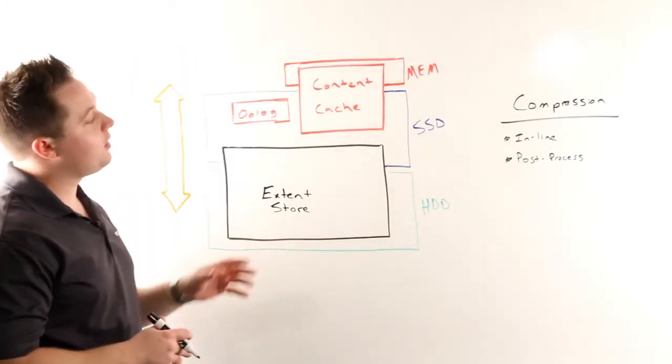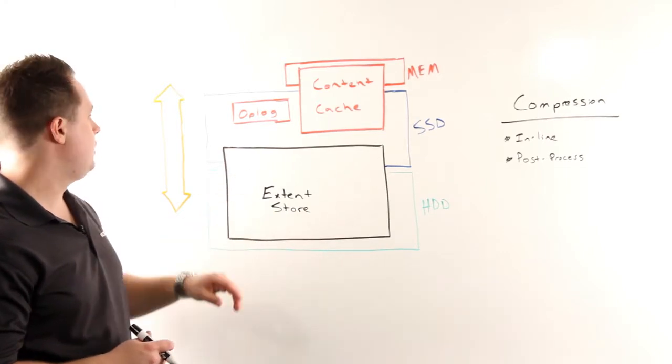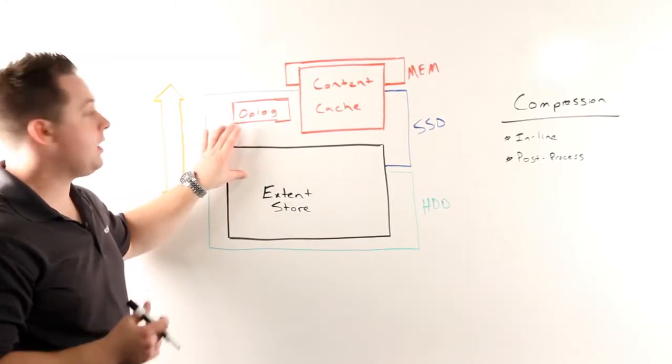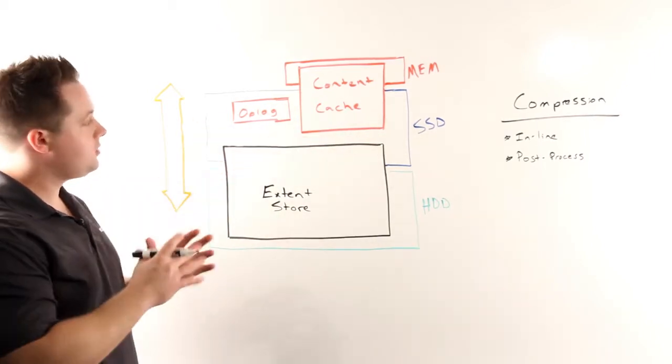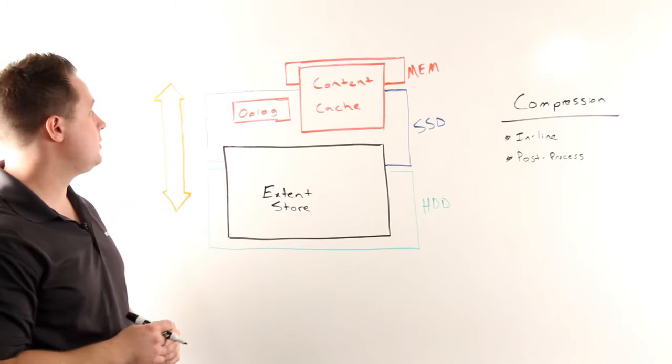First, we'll cover inline compression. Here we can see our traditional NDFS I/O path, where we have our op log, extent store, and content cache. The same I/O path applies when we start using compression.